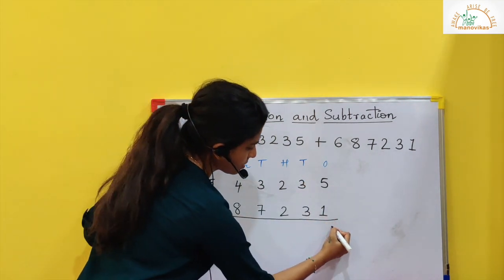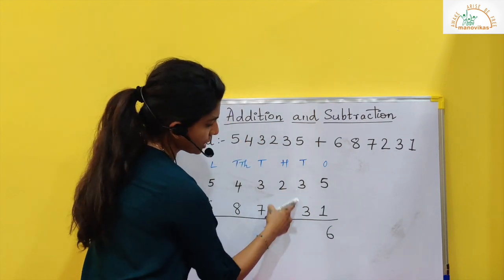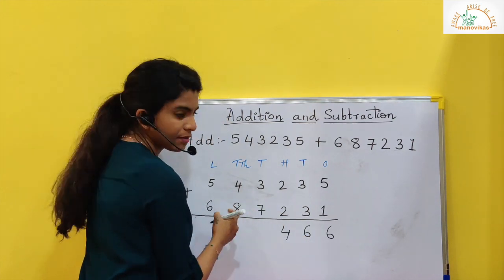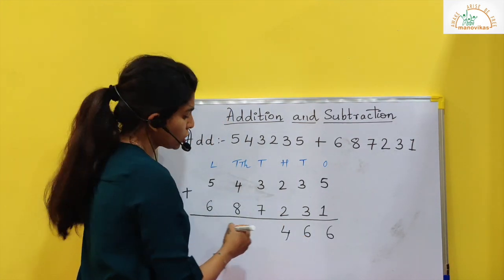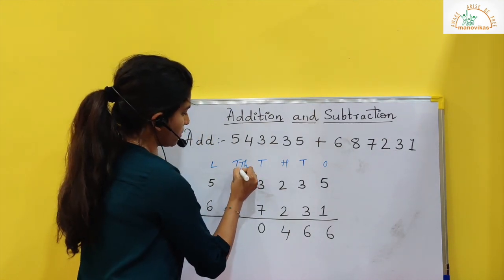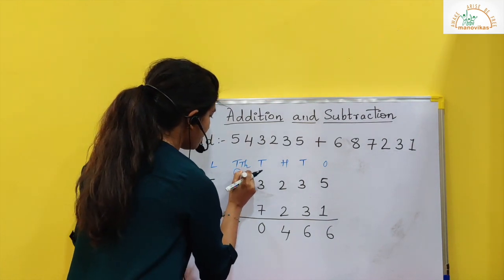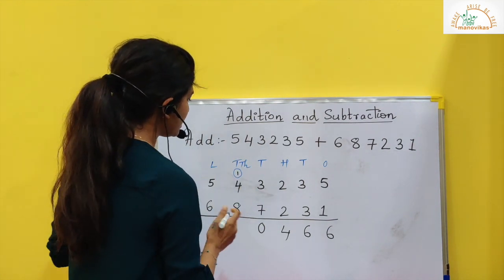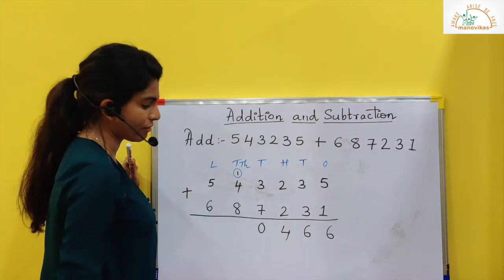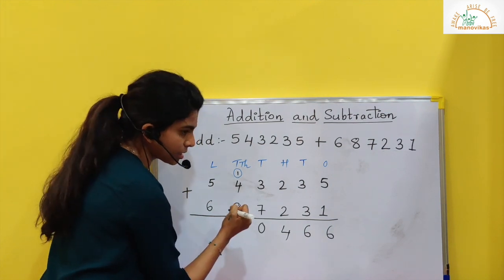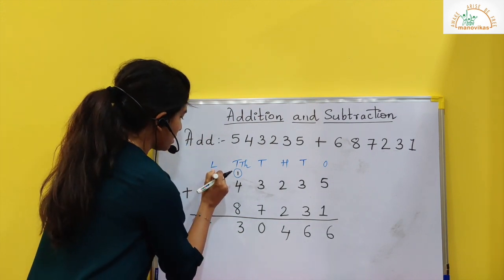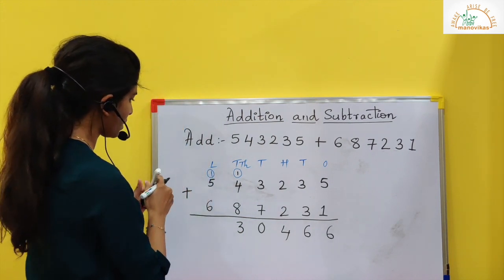5 plus 1 is 6. 3 plus 3 is 6. 2 plus 2 is 4. 3 plus 7 is 10. So I will put 0 here and 1 is carried over. So here I will write 1 — carry 1 on top in the 10,000 place. Now add 8 plus 4 is 12. 12 plus 1 will give me 13. So I will write 3 and 1 will carry over to the next.